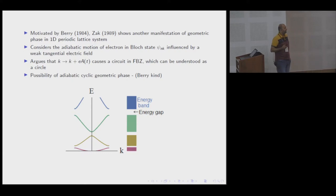Zak carried the idea of adiabatic evolution into a very simple quantum condensed matter setup. The idea was that you have a one-dimensional lattice with any periodic potential. We all know it has a band structure with energy bands. He began asking: suppose I populate, if I have an electron only in the lowest energy state and apply a tangential electric field, a very weak electric field.